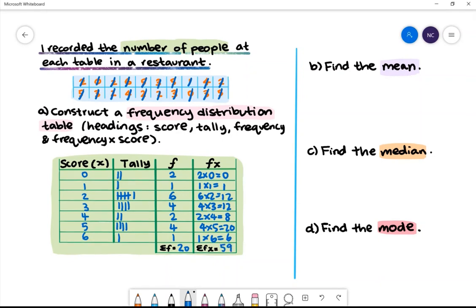Part B: Find the mean. To find the mean, we want to divide the sum of fx with the sum of f. The sum of fx is 59 and the sum of f is 20. We will then get 2.95 as our mean.